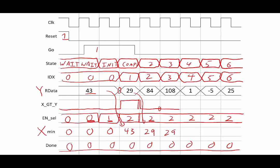As soon as minimum updates to 29, the comparator compares 29 to 84 and discovers x is not greater than y, so it goes down to zero. Because x greater than y is zero and enable select is two, we don't overwrite the value in the minimum register and keep it at 29. For the next clock cycle, 29 is less than 108, so we keep the value the same. Now 29 is greater than 1, so the signal goes high — x greater than y is one right before the clock edge, so we write 1. Then we write negative five into our minimum value. Negative five is not greater than 25, so it goes to zero. One thing to notice is that the minimum value is updating one clock edge after the state that sets the enable signal to one — this delay happens because we have to wait for the clock edge for our values to update and to log whether the load was enabled or not.